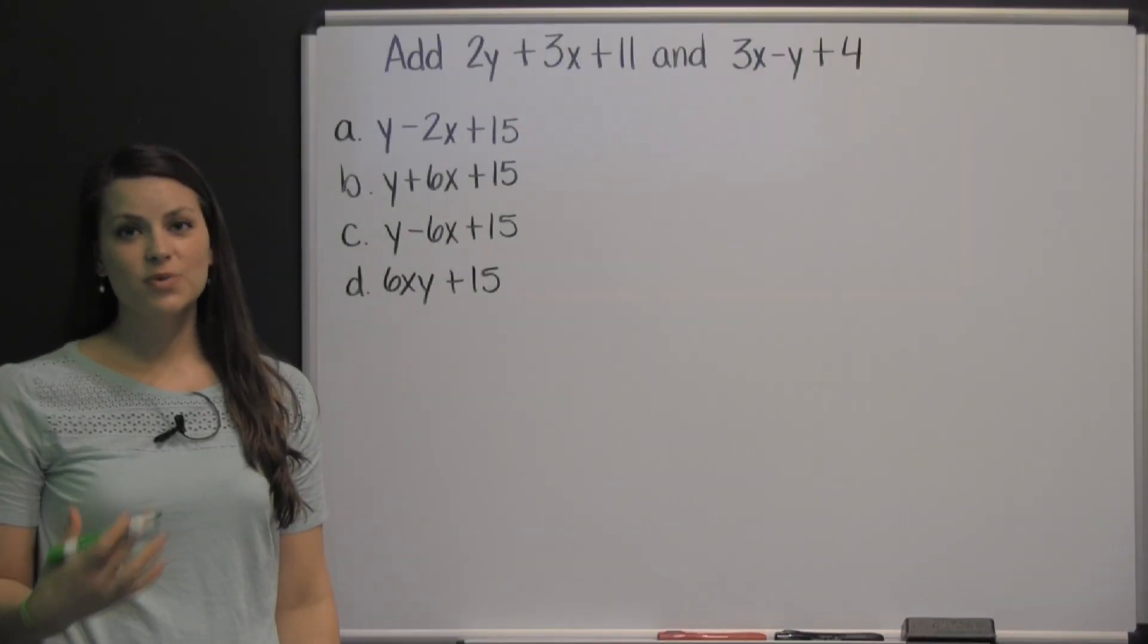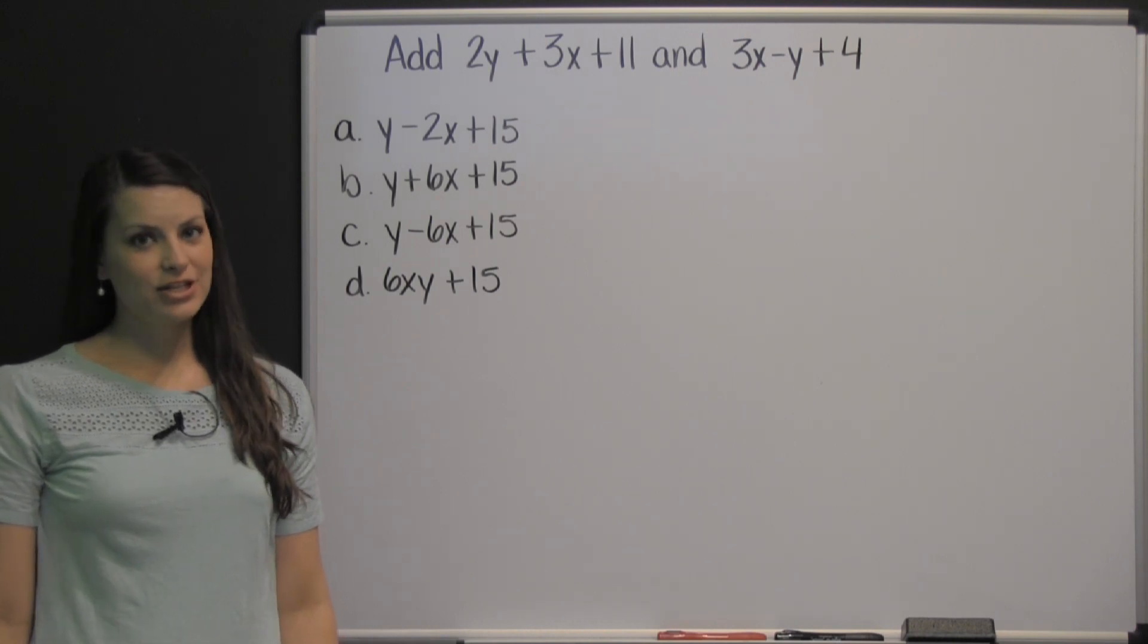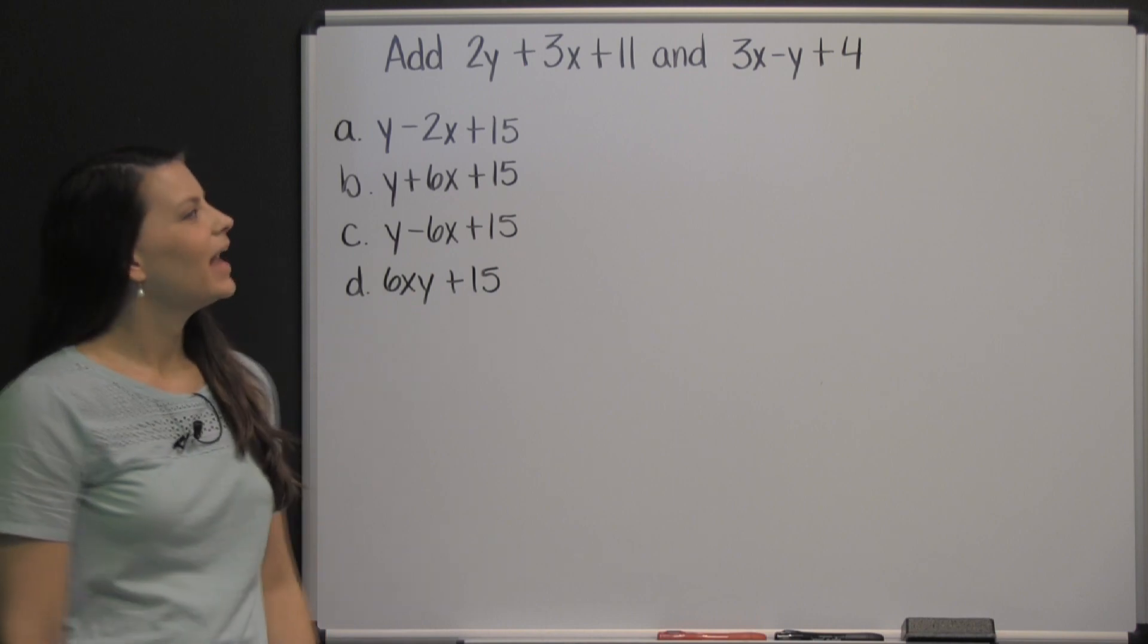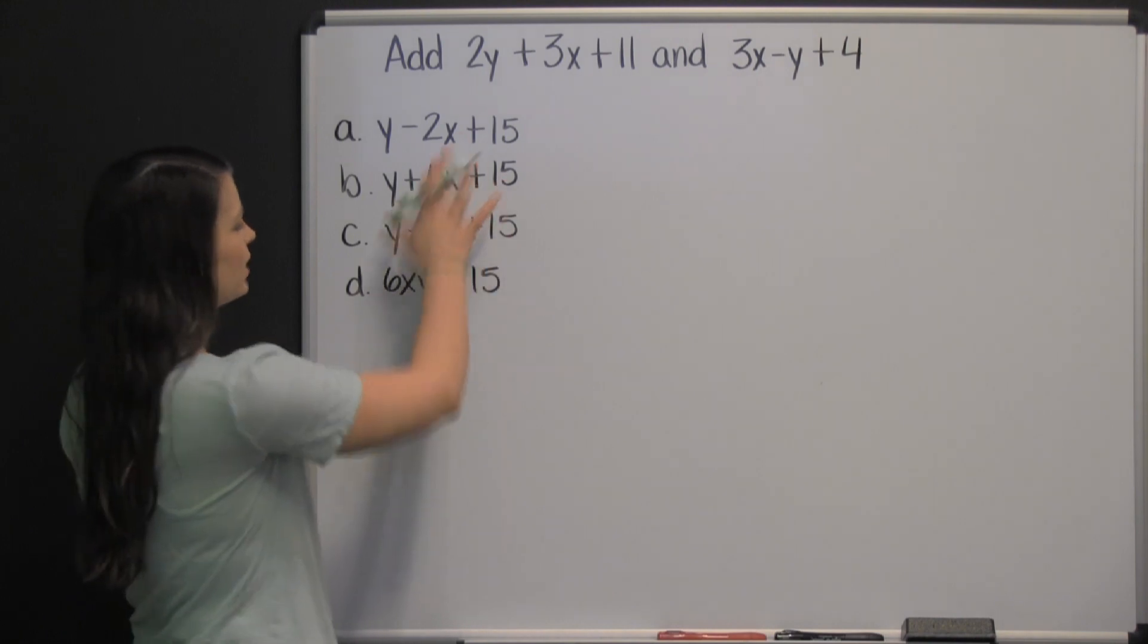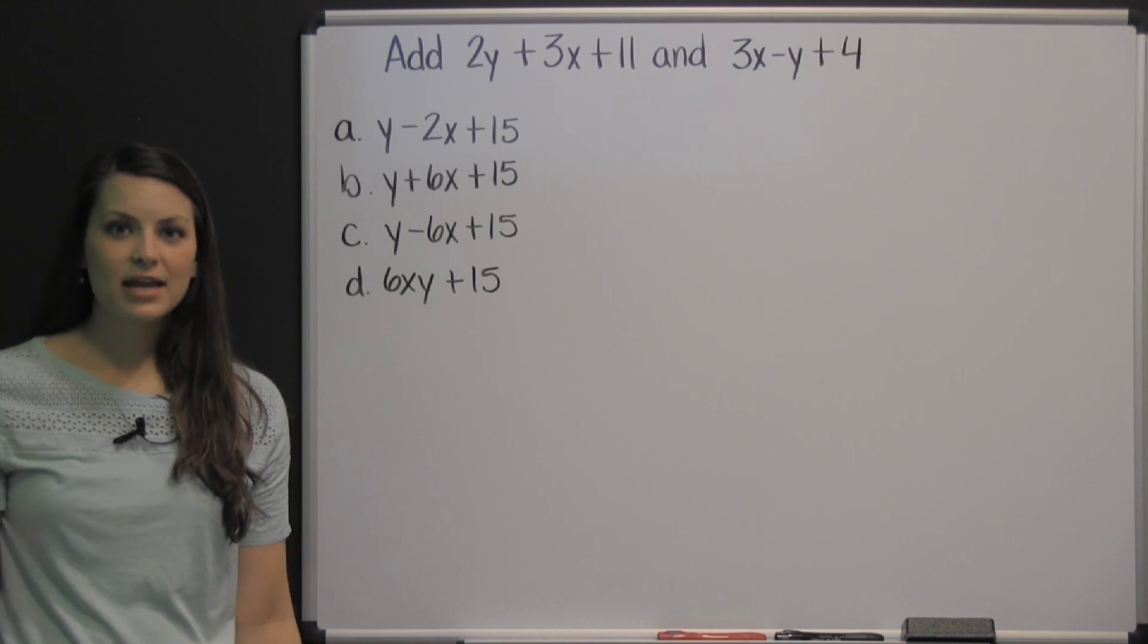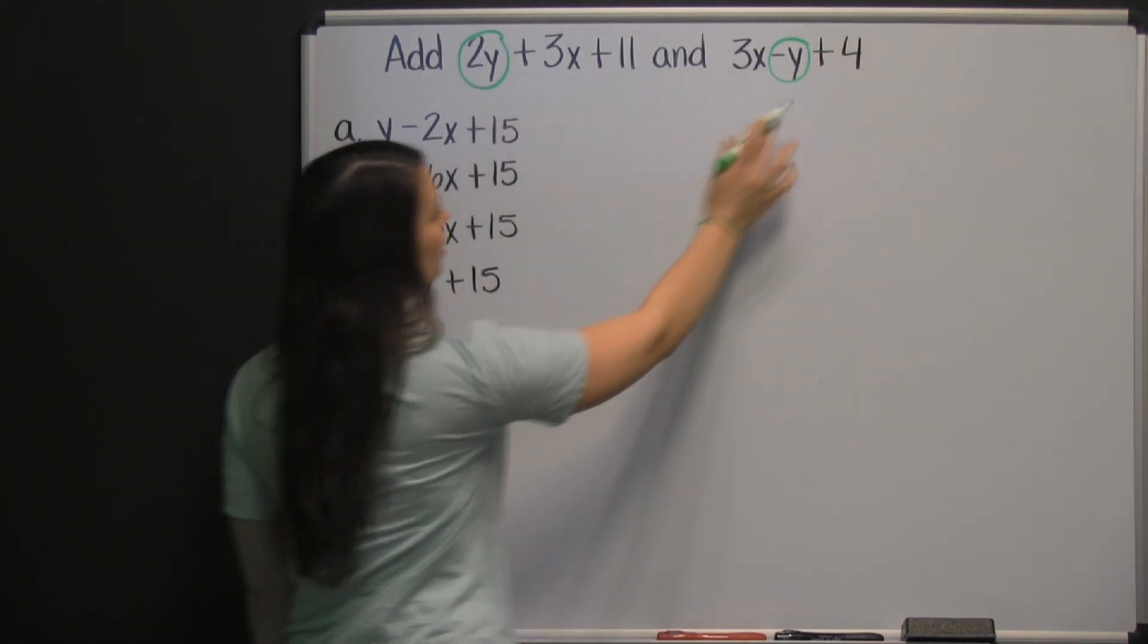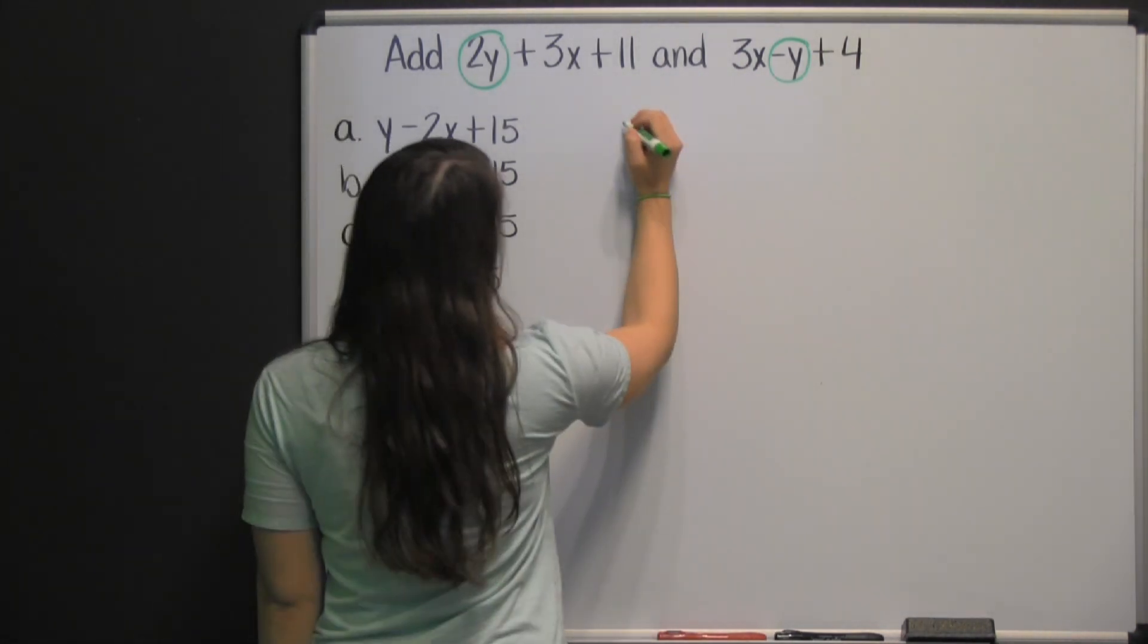This is a mathematics question from an HSPT practice test. Keep in mind that on the HSPT exam, you cannot use a calculator. Add 2y+3x+11 and 3x-y+4. Looking at our answers, they all start, besides D, with y, so I'm going to start with adding the y terms together. Two y and negative y, so it's just 2y minus y. Two minus one is one, so there's one y left.